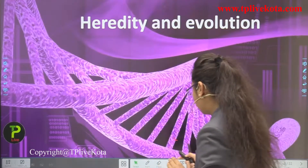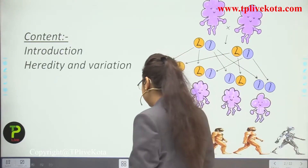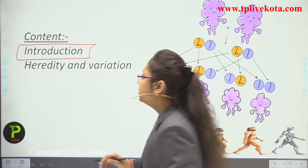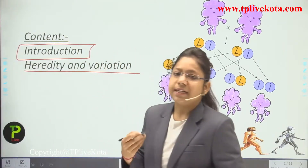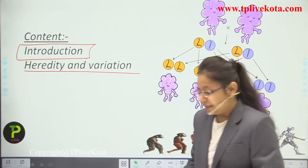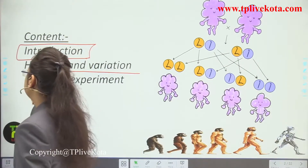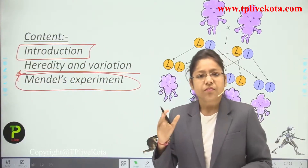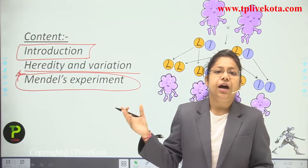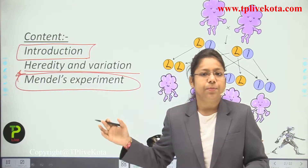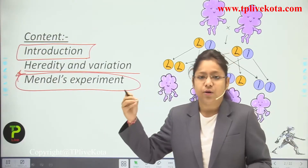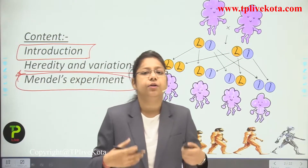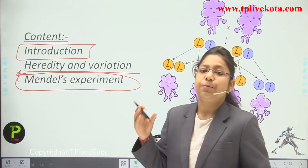The content of today's lecture covers: first, an introduction to the chapter; next, heredity and variation — what heredity is and how genes become variated; and finally, Mendel's experiments. Mendel conducted many experiments, and because of his work we are able to study this complicated topic. He gave certain laws that have been applied to different organisms and proved to be true.